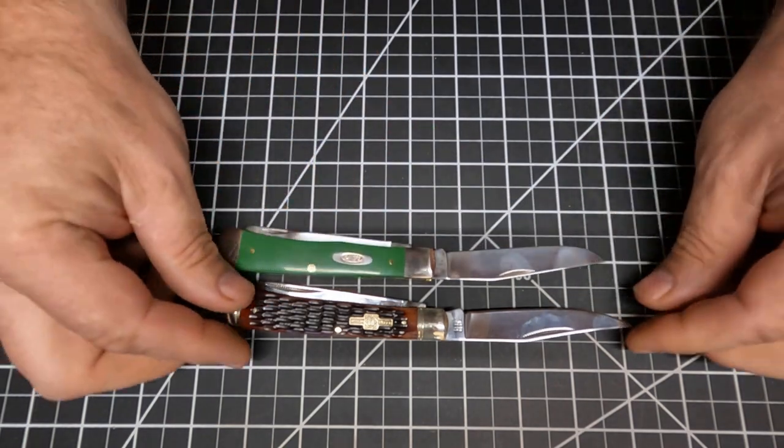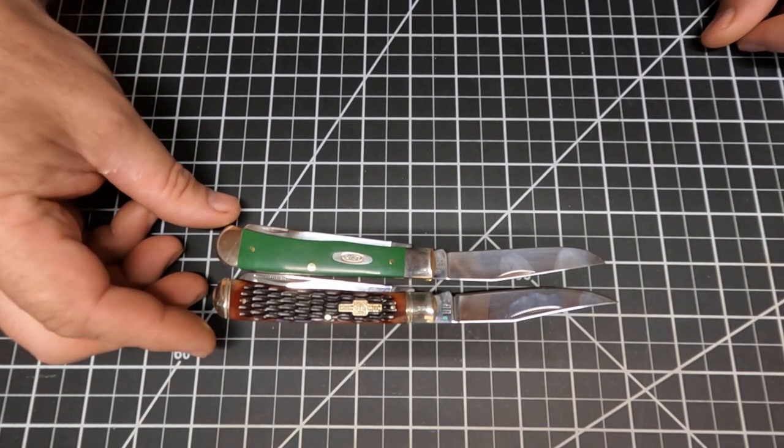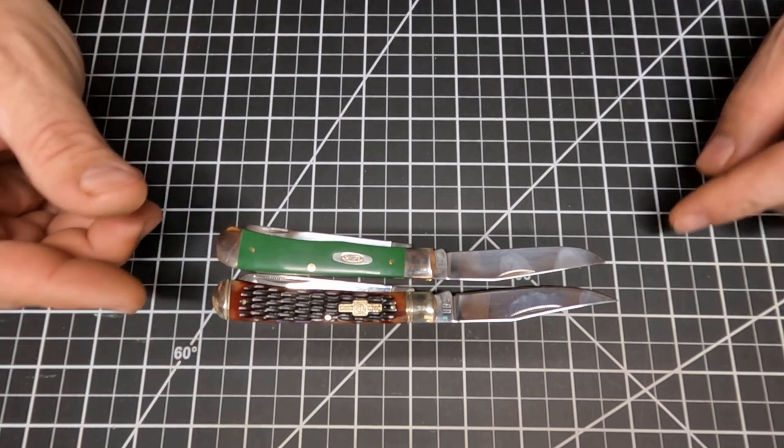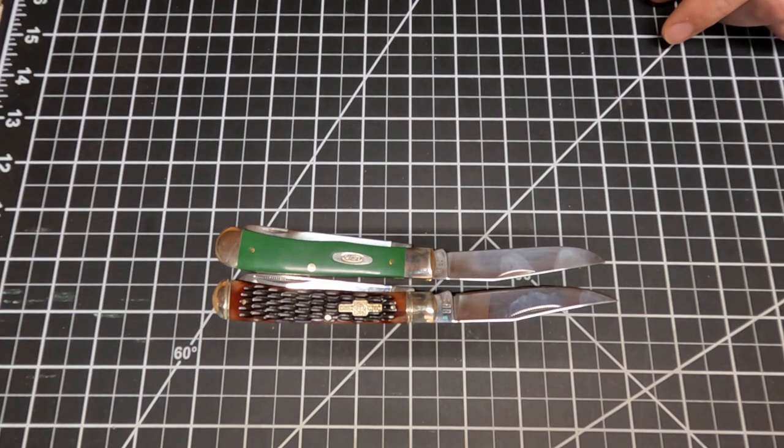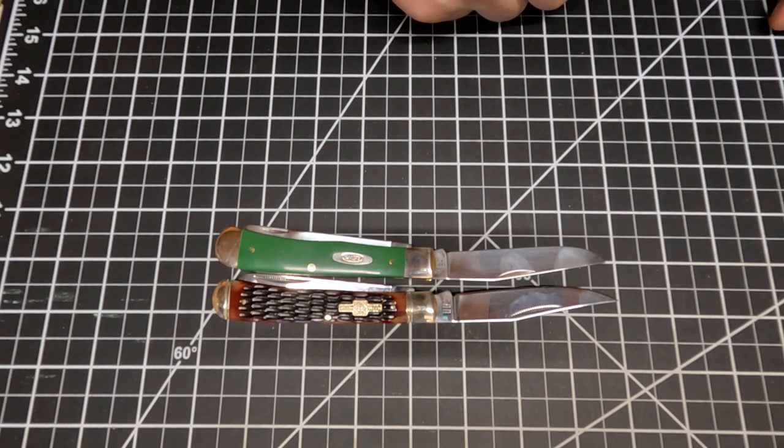The clip point blade there - you can kind of see right there with them right beside each other. Just a little bit more sharper clip point here on this Rough Rider. Just got a little bit more, I guess you'd say.